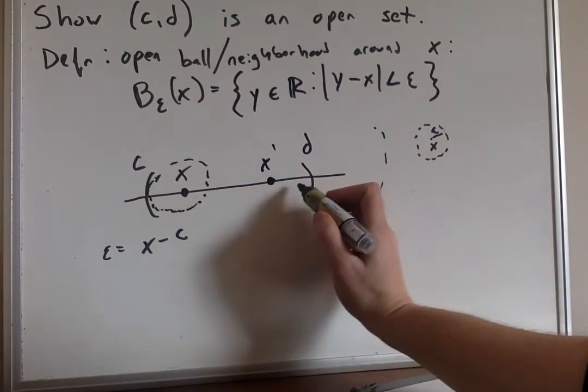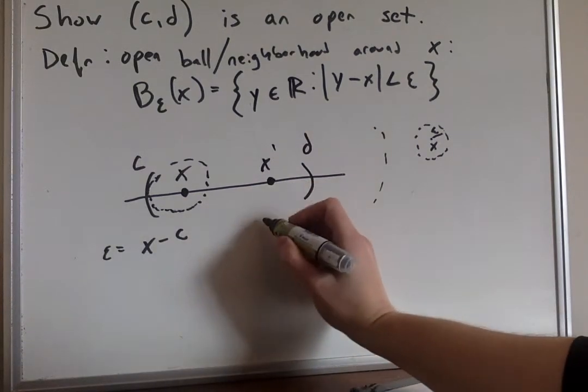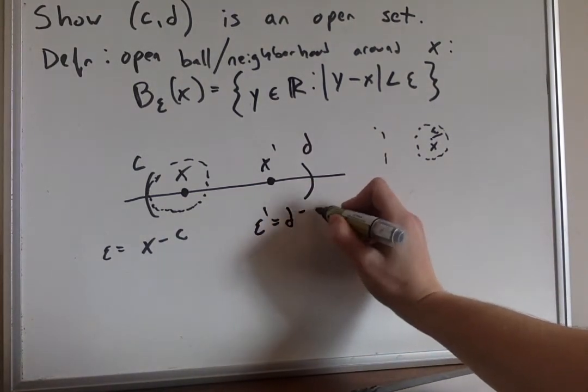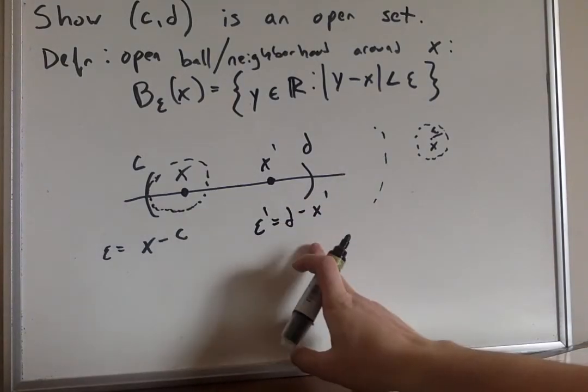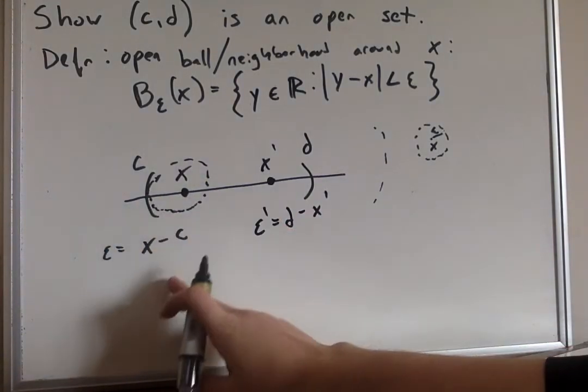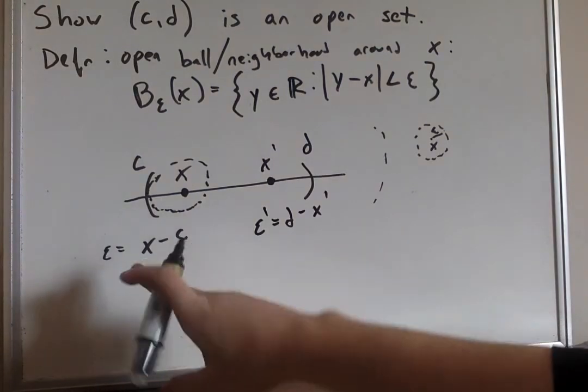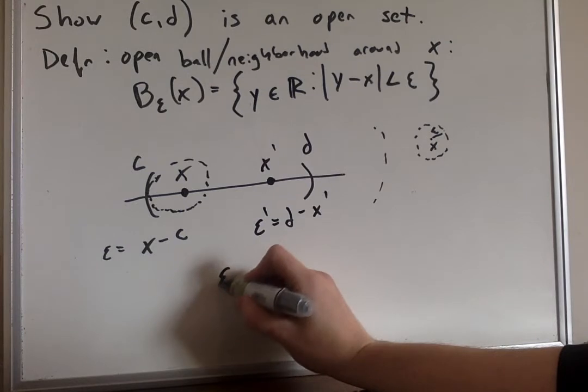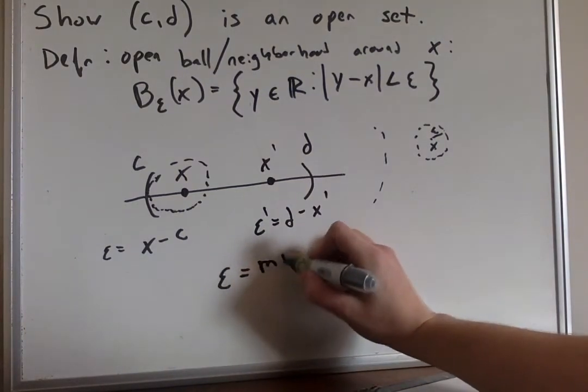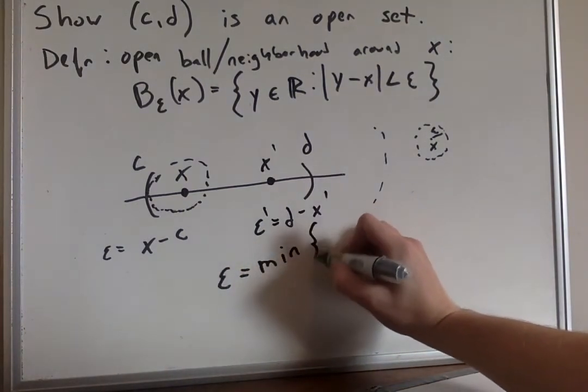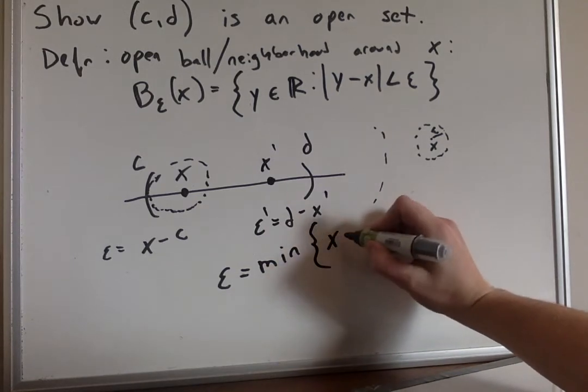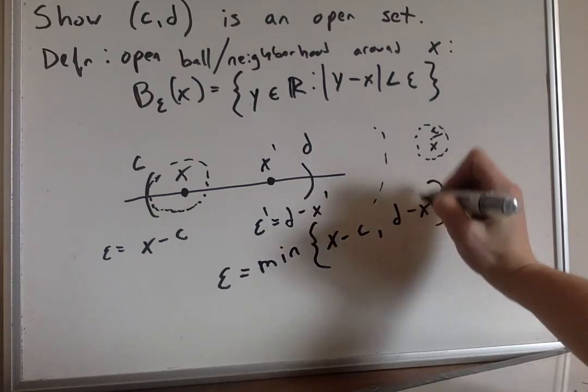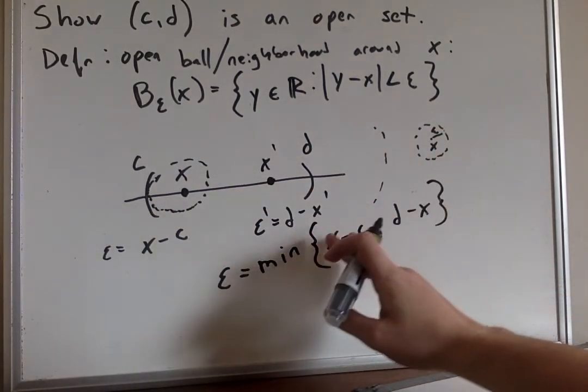So we couldn't use that. What we want to use is the distance to the closer endpoint, which is going to be, using the normal metric, we'd want epsilon prime to equal d minus x prime. So basically, for any x, we want to choose the minimum distance to an endpoint as our epsilon. So if we let our epsilon equal min of x minus c, d minus x, then this will work for us.